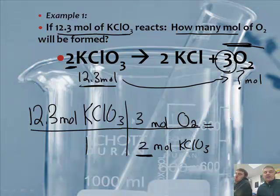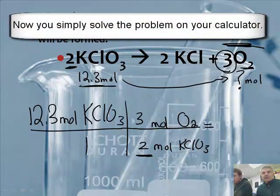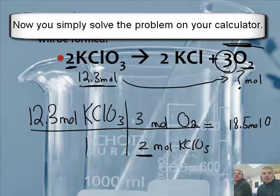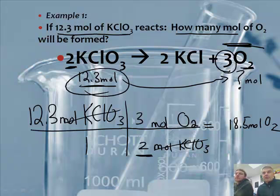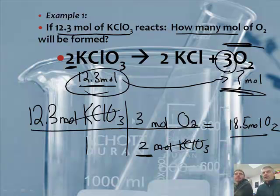So now I get my calculator out. So Mr. Sams is furiously typing on the calculator. So 12.3 times 3 divided by 2, and you get 18.45. 18.5. So 18.5 moles of oxygen. The moles of KClO3 here cancels. Those units cancel. And you're left with moles of oxygen. That's it.